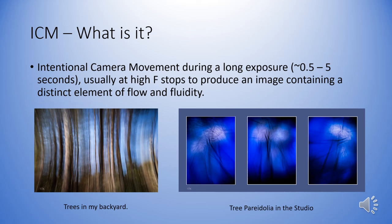If you are new to this form of photography, you may be asking: what is ICM? ICM is intentional camera movement during a long exposure, usually anywhere from one half to five seconds at high F-stops, to produce images containing distinct elements of flow and fluidity. On the left, we have trees in my backyard taken over a half-second exposure panning from the bottom up using the Camera FV5 app on my Android cell phone. On the right are three images of plastic bags backlit with LED lights to create the illusion of trees at night — a tree triptych or tree pareidolia done in the studio.